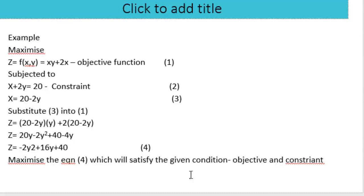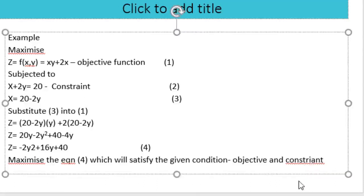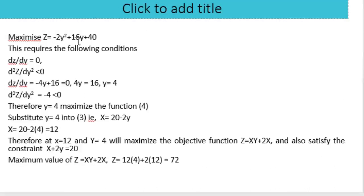We maximize the equation z = −2y² + 16y + 40, which requires the first-order condition dz/dy = 0 and the second-order condition d²z/dy² < 0. Taking the derivative: dz/dy = −4y + 16 = 0, giving y = 4. The second derivative is d²z/dy² = −4, which is less than 0. Therefore y = 4 maximizes the function.